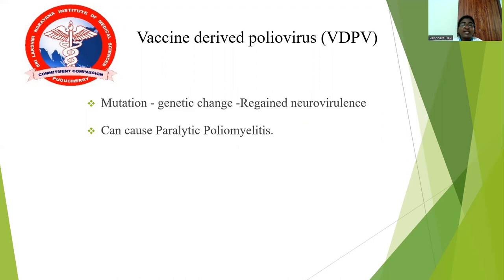Regarding vaccine-derived polioviruses, a genetic mutation occurs so that the vaccine strains regain their neurovirulence. These vaccine-derived polioviruses are capable of causing paralytic poliomyelitis.